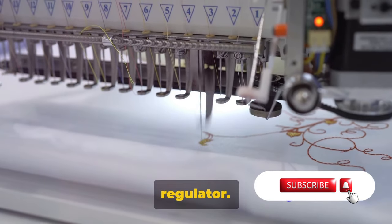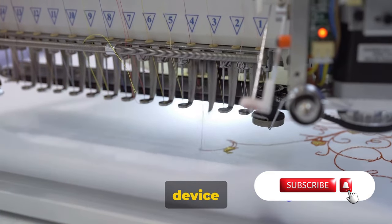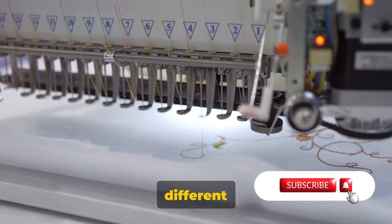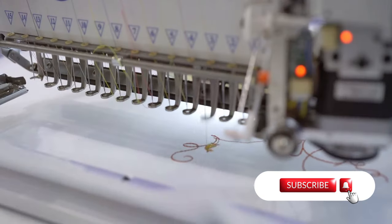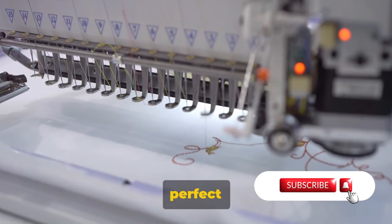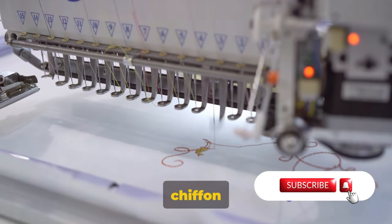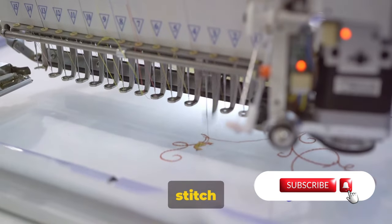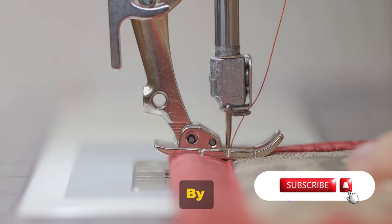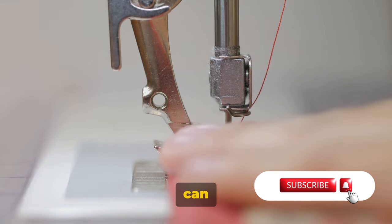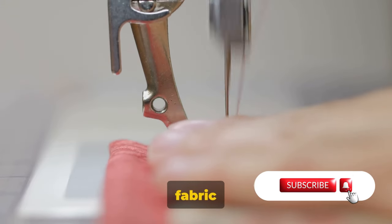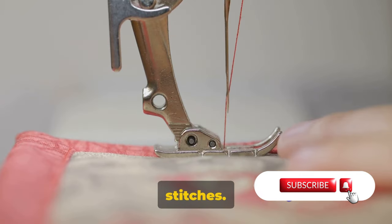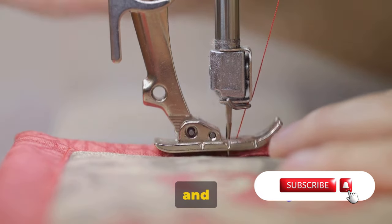Now let's turn our attention to the stitch regulator. This clever little device is all about controlling the length of your stitches. You see, different projects call for different stitch lengths. A tight, dense stitch might be perfect for a sturdy denim jacket, while a delicate chiffon scarf might require a longer, looser stitch. That's where the stitch regulator comes into play. By adjusting the stitch regulator, you can control exactly how far the feed dogs move the fabric with each stitch, effectively determining the length of your stitches.